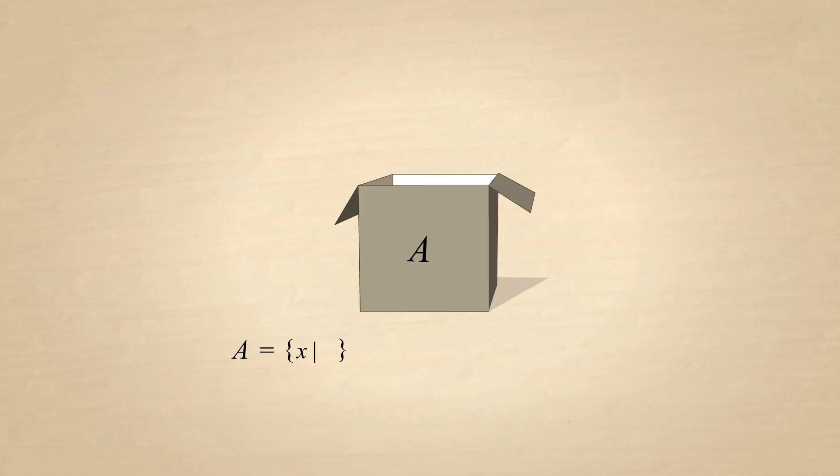In this case, every element must be a natural number and less than 4. The vertical bar means 'such that'. So we would read this definition as A is the set of all elements X, such that, X is a natural number and is less than 4. You may sometimes see a colon used instead of a vertical bar.